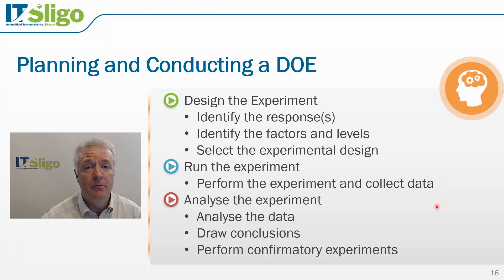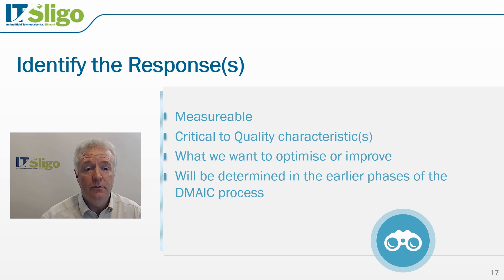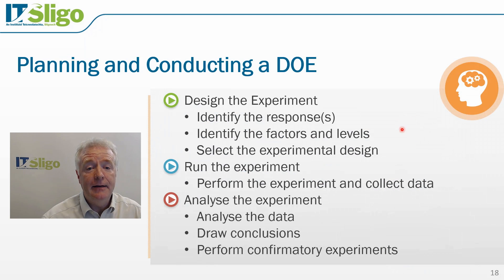We will draw conclusions and perform confirmatory experiments. In relation to the responses or the outputs of our experiment, these need to be measurable. The responses will also be those characteristics which are critical to quality, and the earlier phases of our DMAIC process will have identified those — from our analyse phase, which aspects we need to optimise or improve.